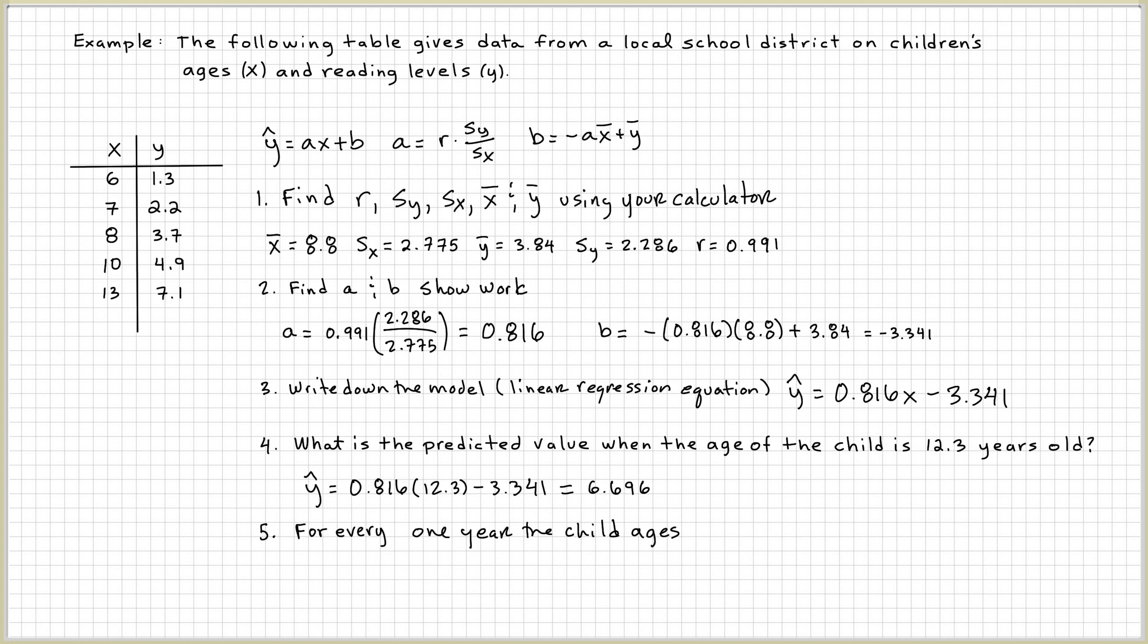Next. For every one year the child ages, how much of a reading level do they change? So we're going to still use the model, but we're not going to use the y intercept anymore. What we'll do is we'll just take the slope and x. And then what we'll do is we'll plug in 1 because they want to know for one year. And so here, after we plug in 1 into 0.816, we get 0.816 increase for each year of growth. So the reading level increases 0.816 for each year of growth.